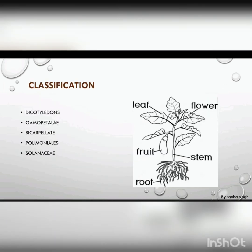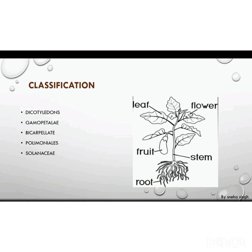Classification of brinjal: Dicotyledons — meaning it contains two cotyledons. Gamopetalae is the group. Bicarpellate is the sub-group. Polemoniales is the order. Solanaceae is the family of brinjal.